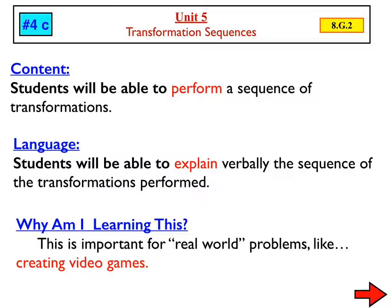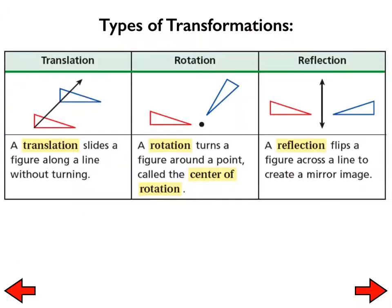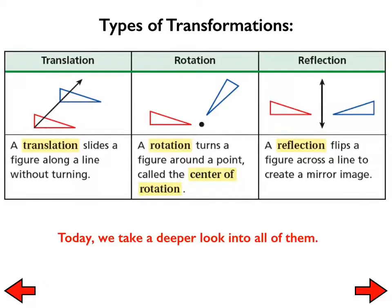Today, lesson 4C: Transformation Sequences. We're putting together all of the different transformations that we've been talking about. You'll be given pictures of transformations, and we're going to figure out how to make each transformation in either one step or two steps. We have to remember all the things we've talked about: translations, rotations, and reflections. Today we take a deeper look into all of them.